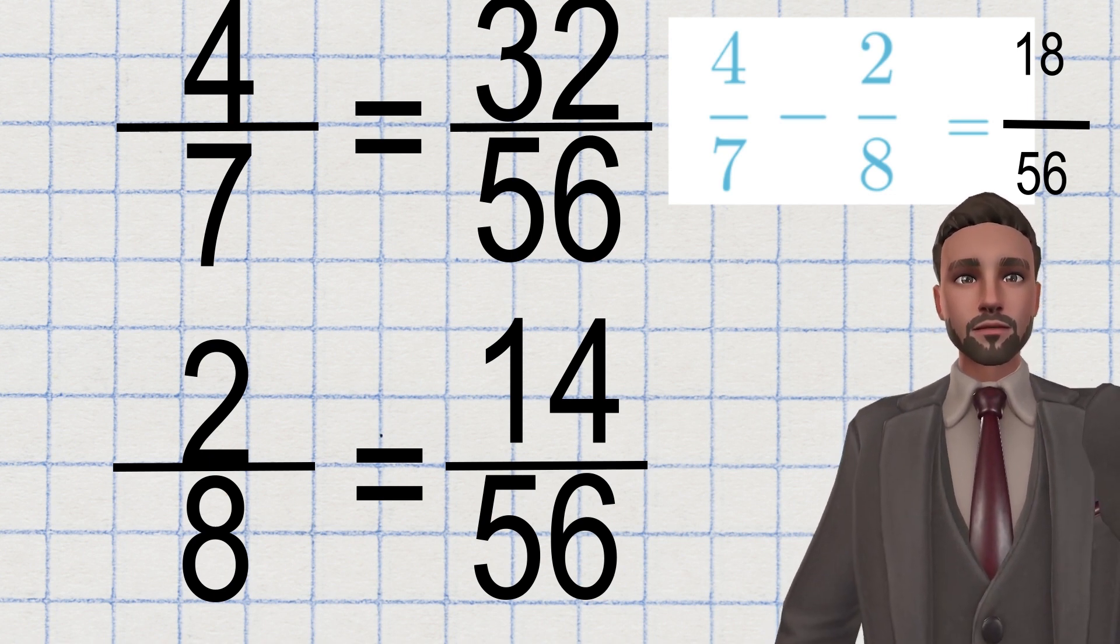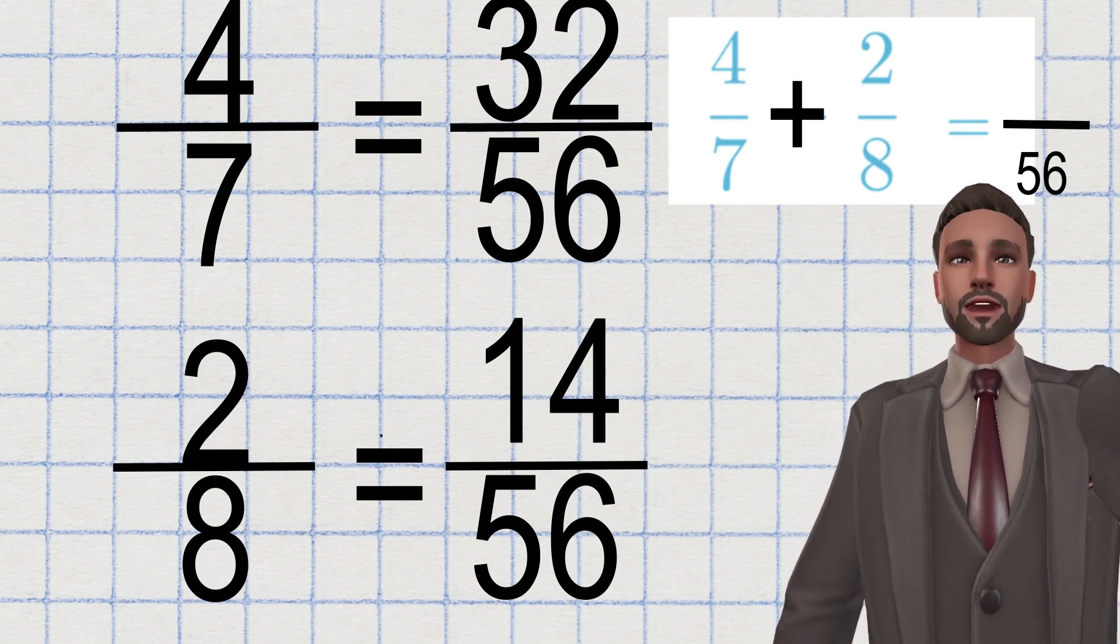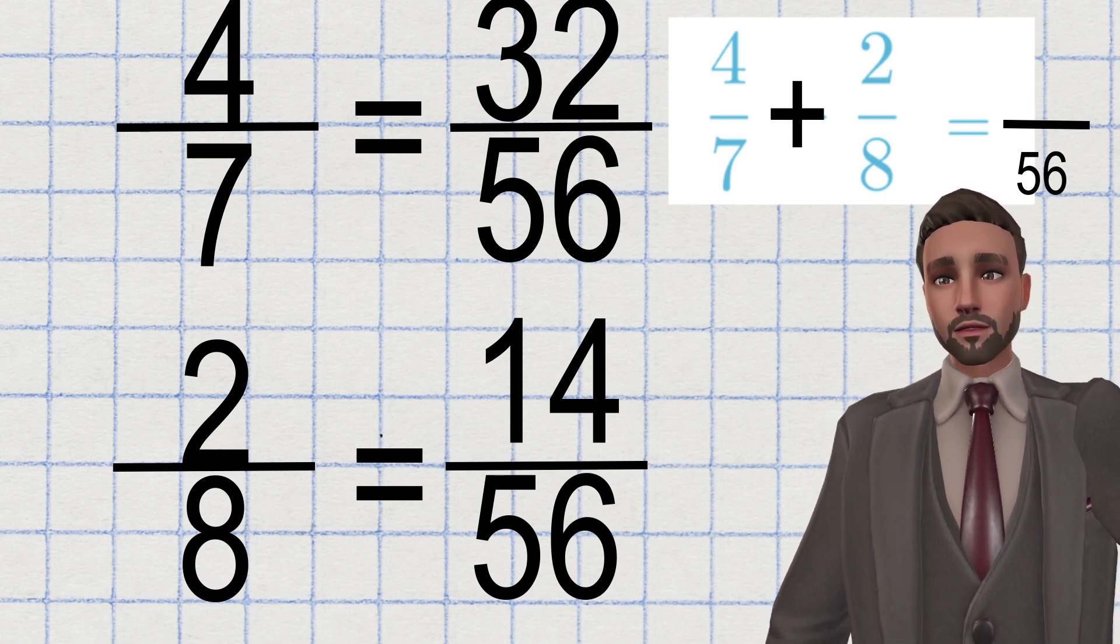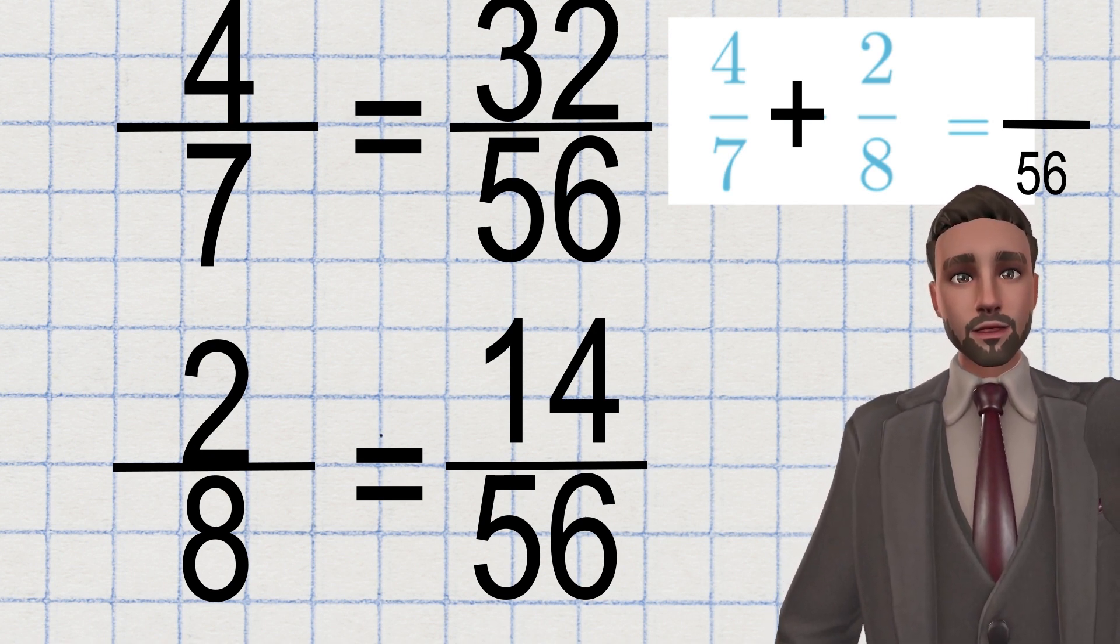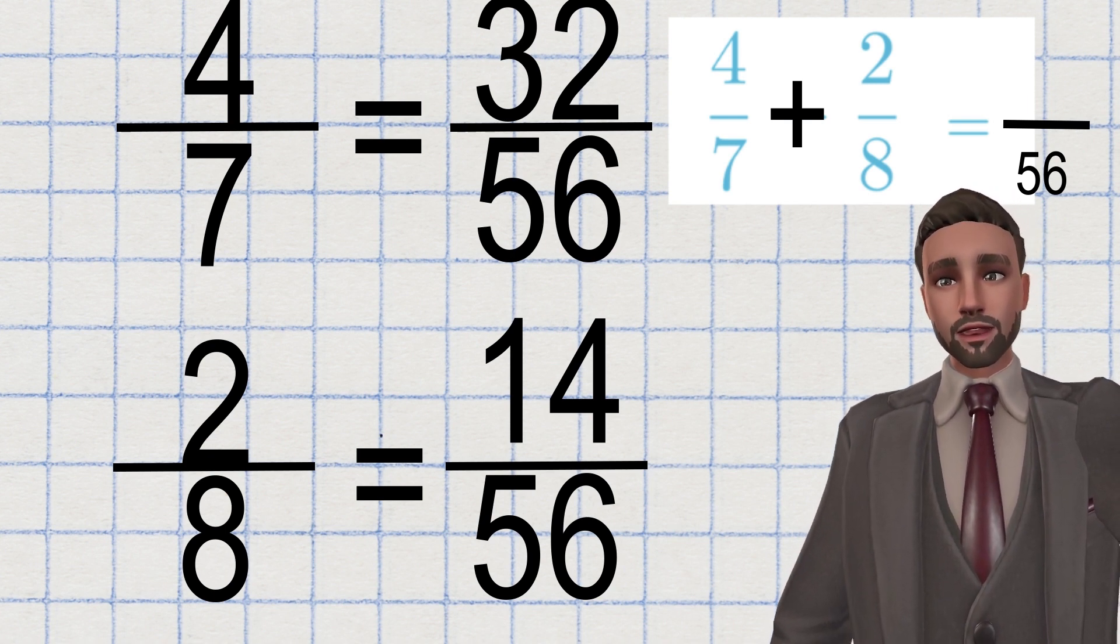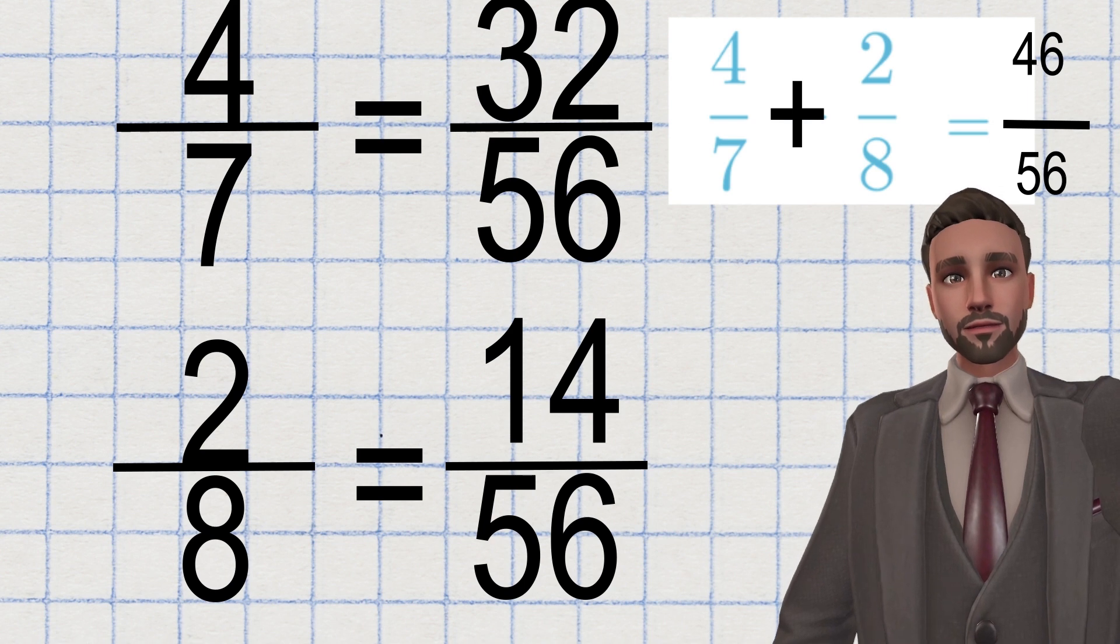If this was addition, one second, then I would still do exactly the same. But instead of subtracting the 14 from 32, I would add the 14 to 32, which would make 46 over 56. Simple.